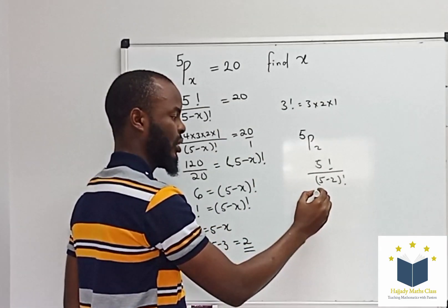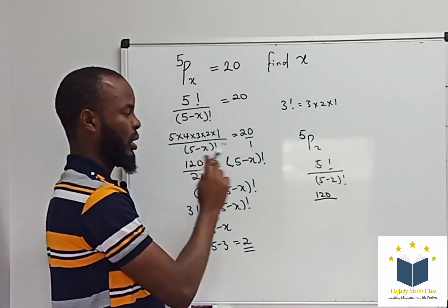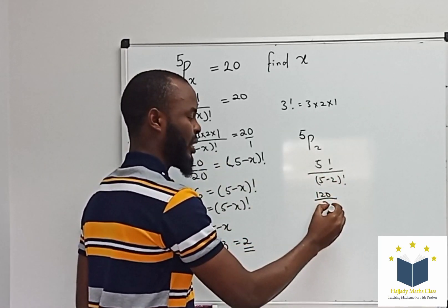5 factorial gives 120. 5 minus 2 is the same thing as 3 factorial.